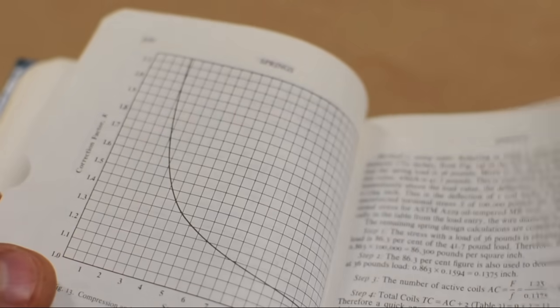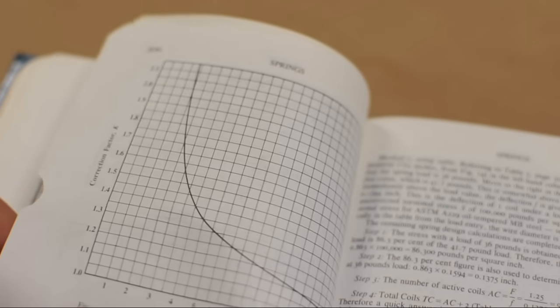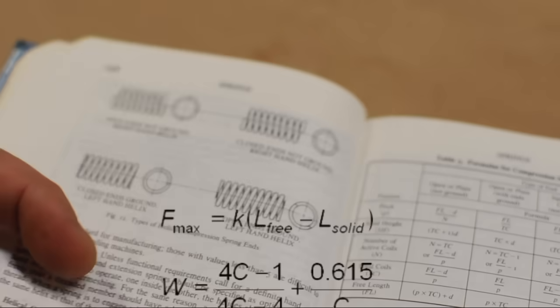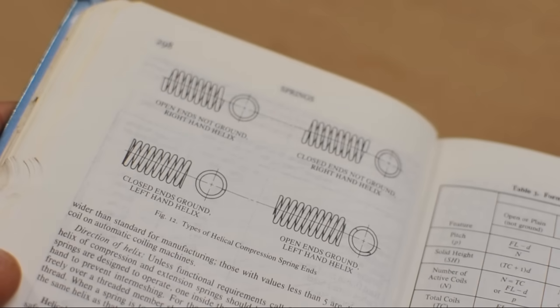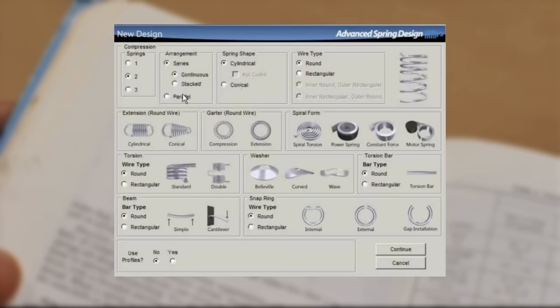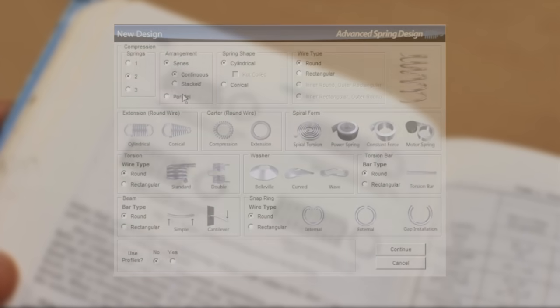If your spring is complicated, or you're interested in things like how many cycles it's good for, you'll need to resort to some math. That, or turn to specialized software. UTS's advanced spring design is a good one, but it'll set you back a few dollars. However, all hope is not lost. Here's what you do. Cheat!